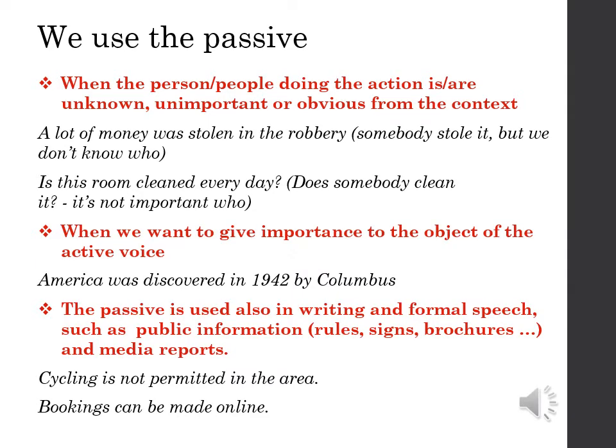We use the passive when the person or people doing the action is or are unknown, unimportant, or obvious from the context. For example, 'A lot of money was stolen in the robbery' — somebody stole it, but we don't know who. 'Is this room cleaned every day?' — does somebody clean it? Actually, it's not important who.